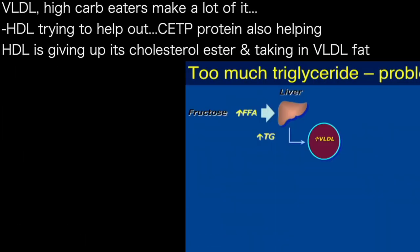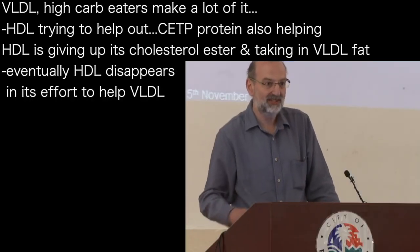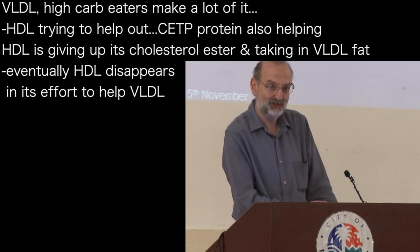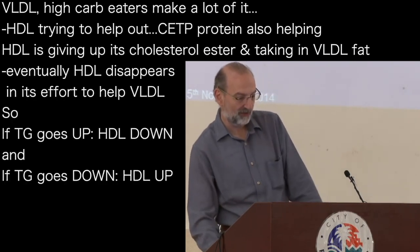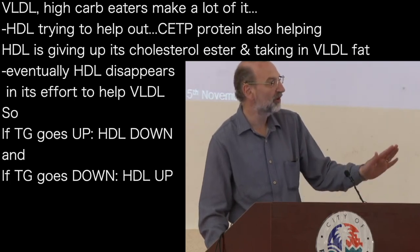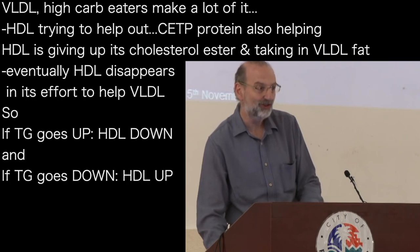Here's this VLDL that people on high-carb diets make a lot of. Not only can it crash into HDL, but there's a protein that helps it swap bits and pieces with HDL. HDL is actually trying to help out this big particle — saying, give me some of your triglycerides and I'll help you distribute it. But HDL ends up giving up its cholesterol ester, taking up fat, and eventually it gets worn out and disappears in its effort to help VLDL do its job. So anybody who's got high triglycerides or high VLDL will have a low HDL — it goes hand in hand. If your triglycerides go up, your HDL will go down; if your triglycerides go down, your HDL will go up.